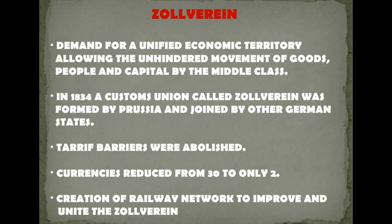There was one more thing — the Zollverein. Basically they demanded a unified economic territory allowing unhindered movement of goods, people, and capital by the middle class. In 1834, a custom union called the Zollverein was formed by Prussia and joined by other German states. Tariff barriers were abolished, currencies were reduced to only 2, and a railway network was created to improve and unite this Zollverein.